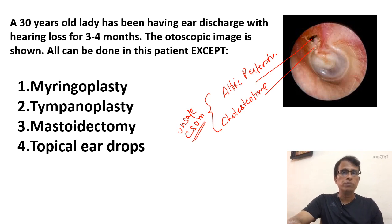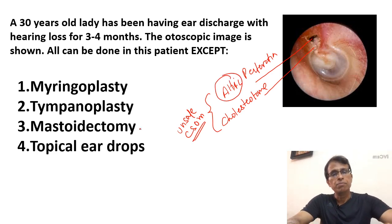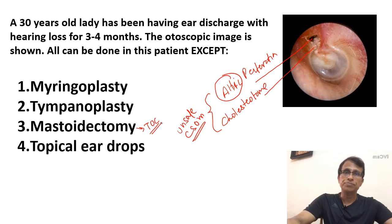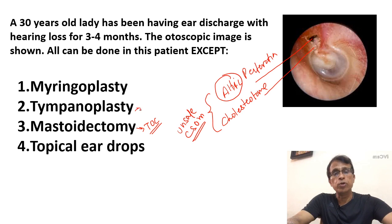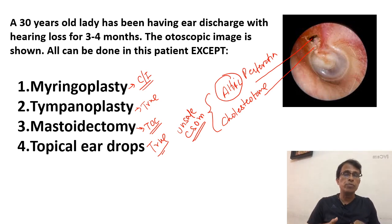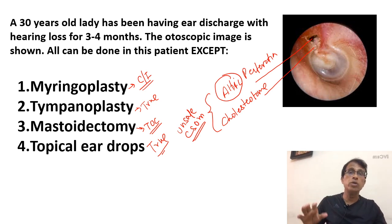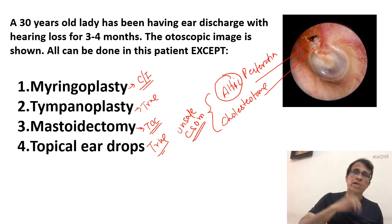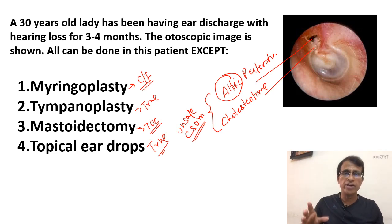In unsafe CSOM, even if only one of the two features is seen — whether just attic perforation or just cholesteatoma — it is unsafe. If both are seen, it is clear-cut unsafe CSOM (aticoantral disease). The treatment of choice is mastoidectomy. You can also do tympanoplasty, and ear drops are always used — both are true. However, myringoplasty is contraindicated in unsafe CSOM. You should never do a myringoplasty — it is done for safe CSOM only. This is contraindicated in unsafe CSOM, and this is a very popular exam question.